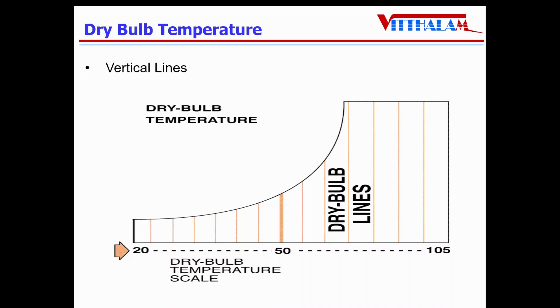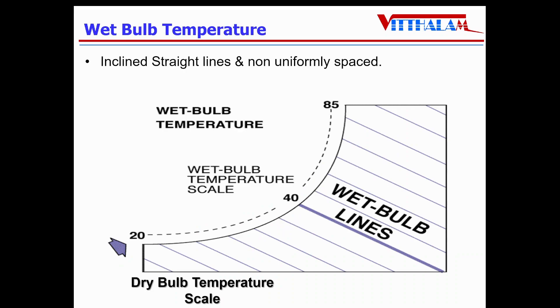The vertical line represents the dry bulb temperatures, while the wet bulb temperature is an inclined straight line, non-uniformly spaced. On saturation curve, obviously dry bulb temperature and wet bulb temperature are same. You can see on saturation curve, if wet bulb temperature is 40 degrees Celsius, then the dry bulb temperature will also be 40 degrees Celsius or vice versa.